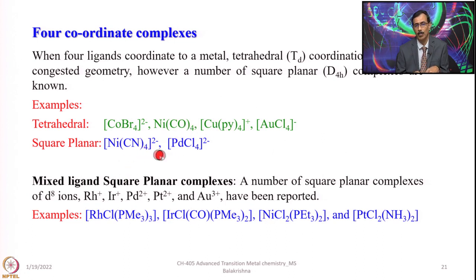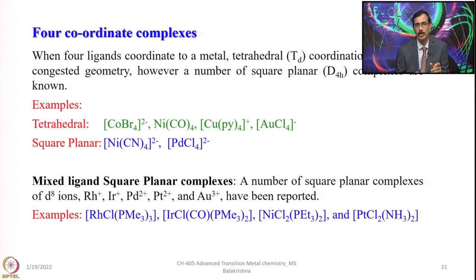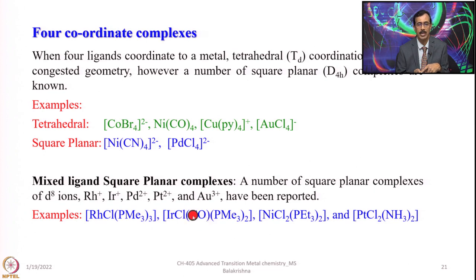Mixed ligand square planar complexes are seen in large numbers from the cobalt group — rhodium(I) and iridium(I) — and from the nickel group: nickel(II), palladium(II), platinum(II), and gold(III), which all have a preference for square planar geometry. One example shown is very similar to Wilkinson's catalyst but with trimethylphosphine instead of triphenylphosphine. Another example is transchlorocarbonylbis(trimethylphosphine)iridium, similar to Vaska's compound — a mixed ligand complex having halide and phosphine. Also shown is the well-known diaminedichloroplatinum compound.